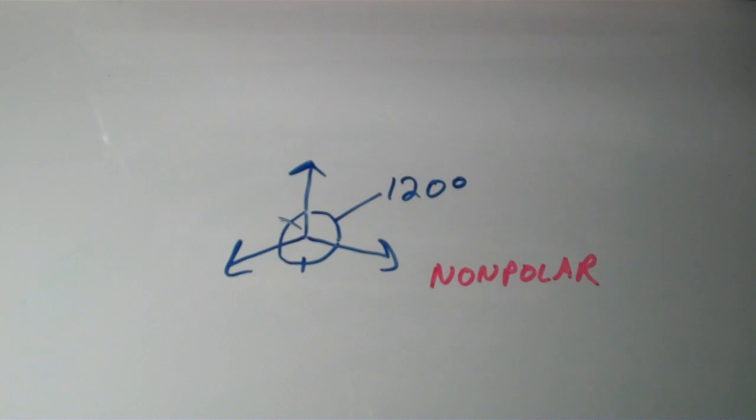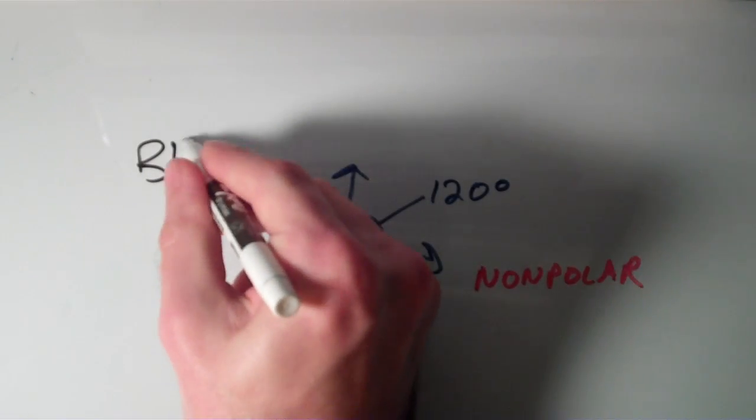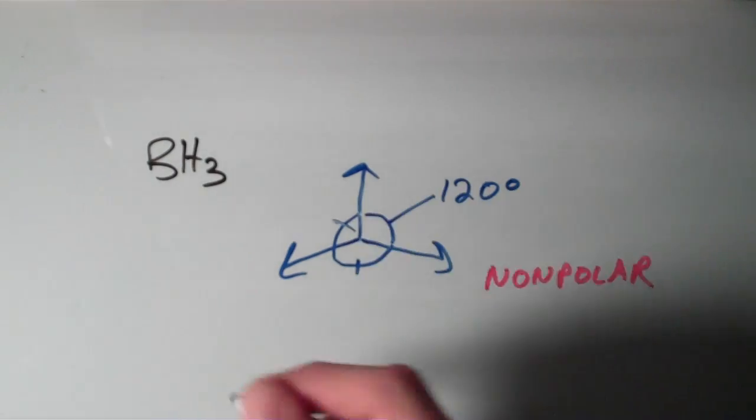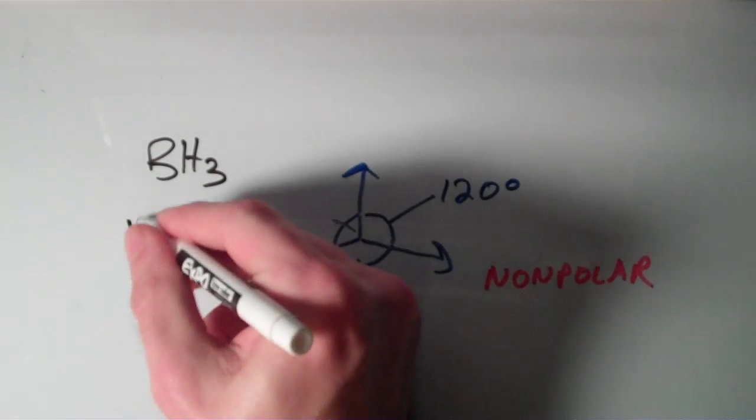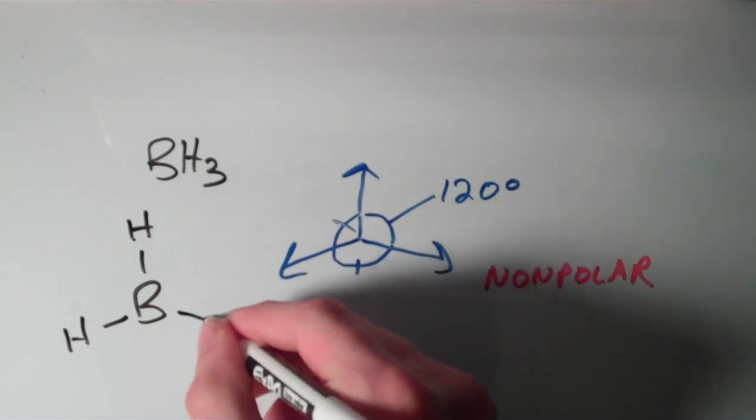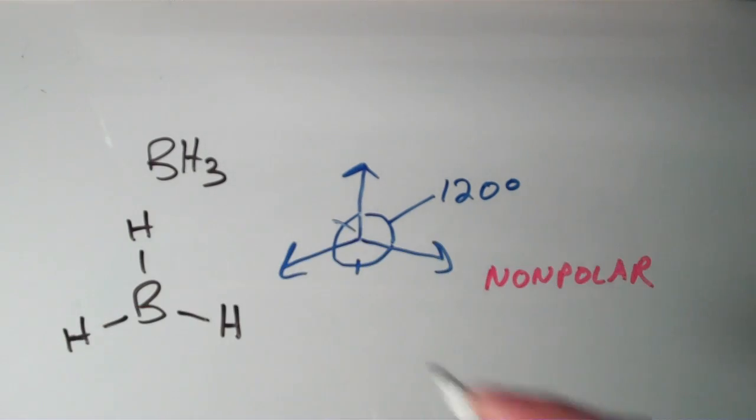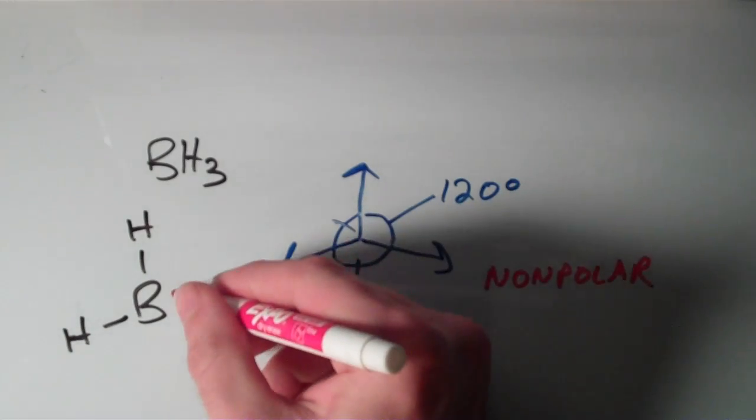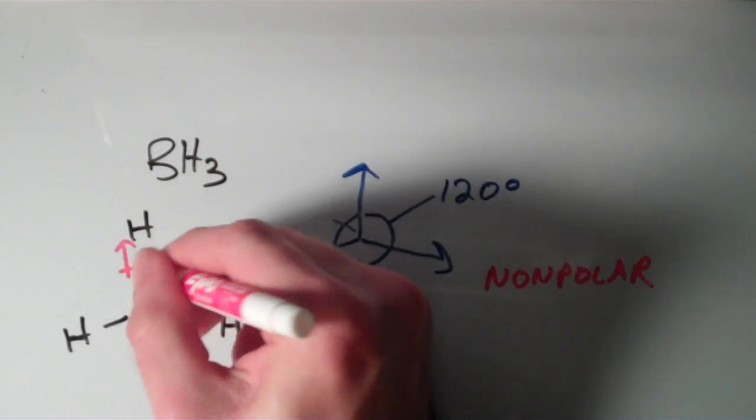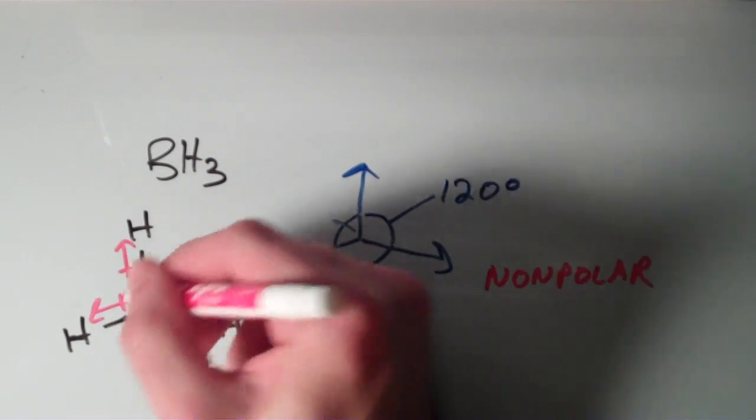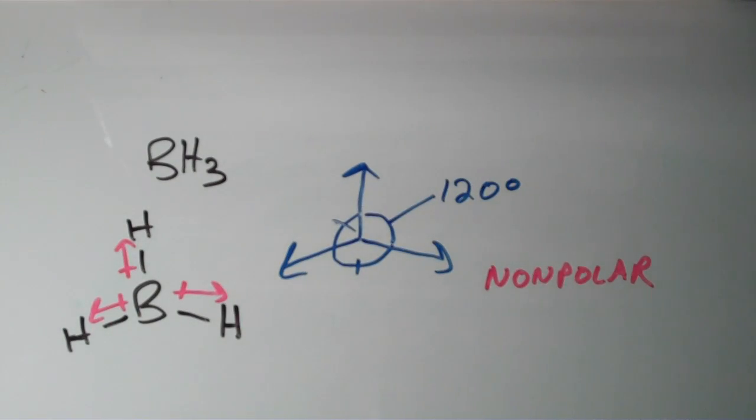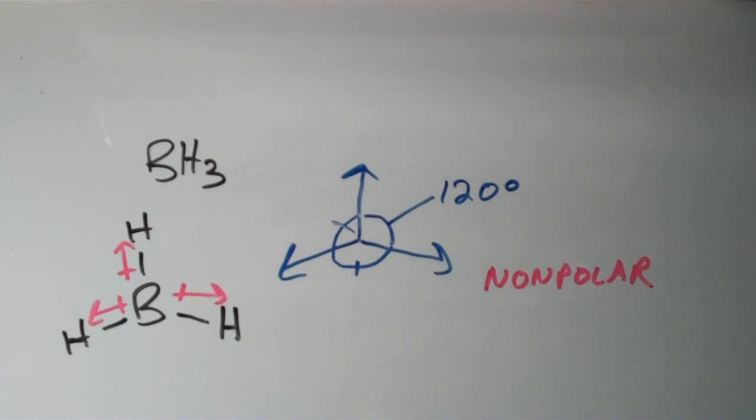An example would be, let's say, BH3. If we look at the Lewis structure for BH3, it looks like this, boron trihydride. Here we have three identical polar bonds. Hydrogen is actually more electronegative than boron, so they are all going to point this way. And if you were to add those vectors together, you would get zero. So this BH3 would be a nonpolar molecule.